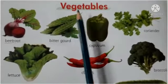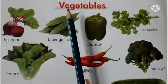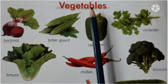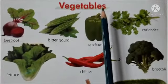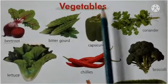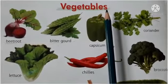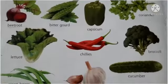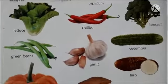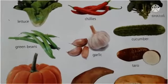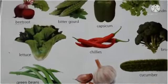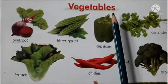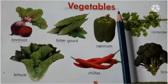So let's spell it here. V-E-G-E-T-A-B-L-E-S — Vegetables. Vegetables means Sabjian.